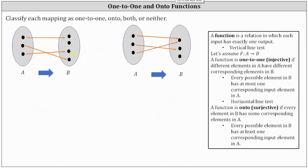On the left, notice we have four elements in set B. Three of them have exactly one input in set A, and the second element in B has zero corresponding input elements in A. All elements in B have at most one corresponding input — zero or one is at most one — so we do have a one-to-one function. However, it's not an onto function because the second element having zero corresponding inputs does not meet the requirement of having at least one. This mapping is a one-to-one function, not an onto function.